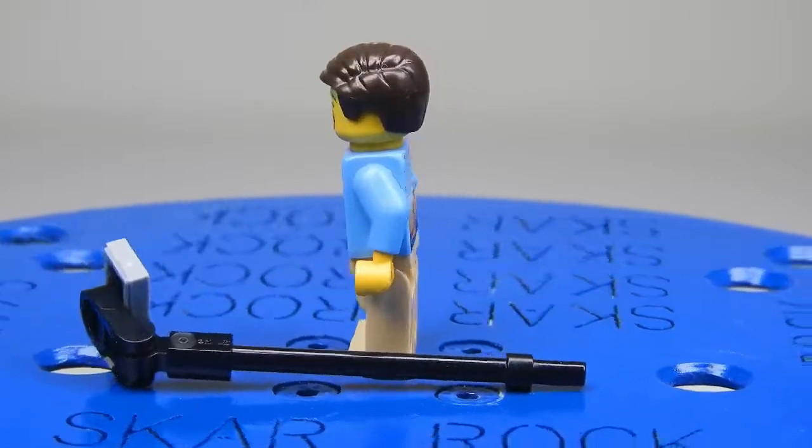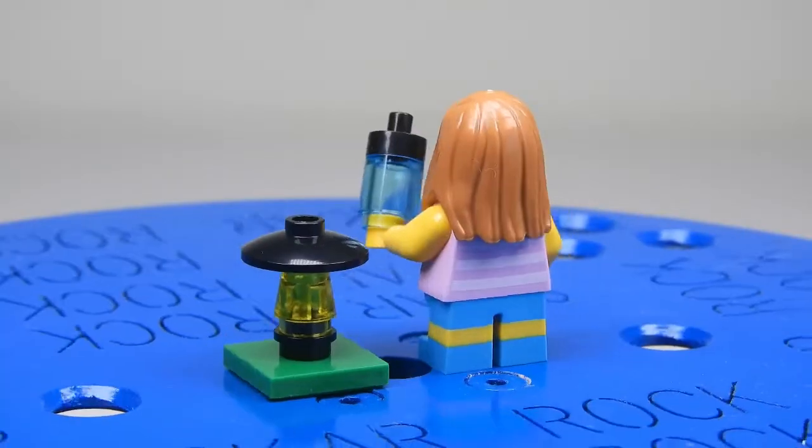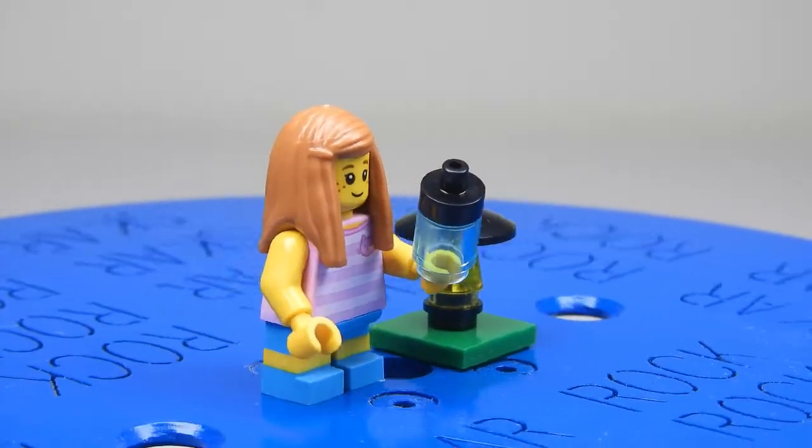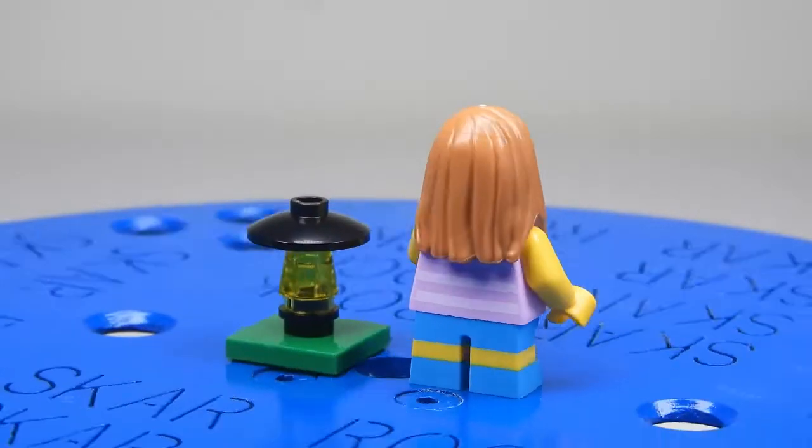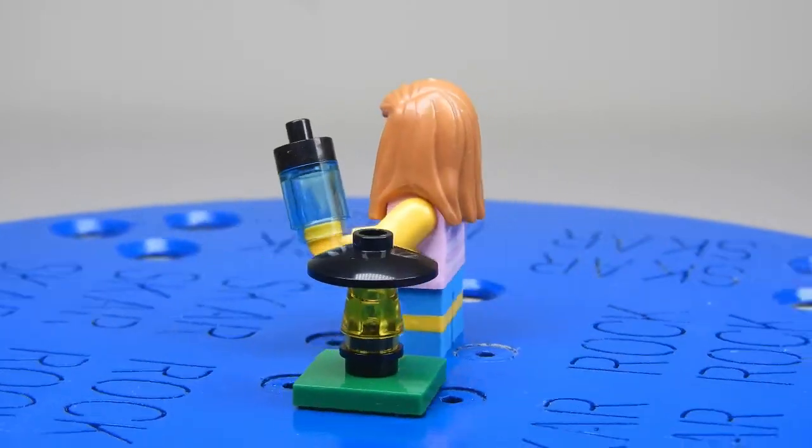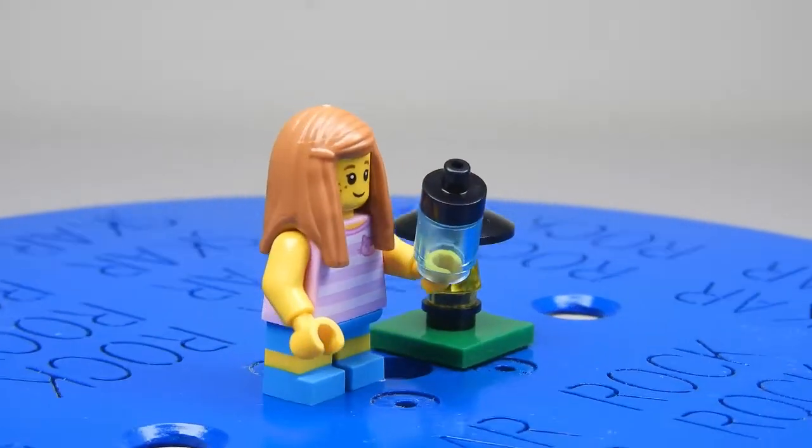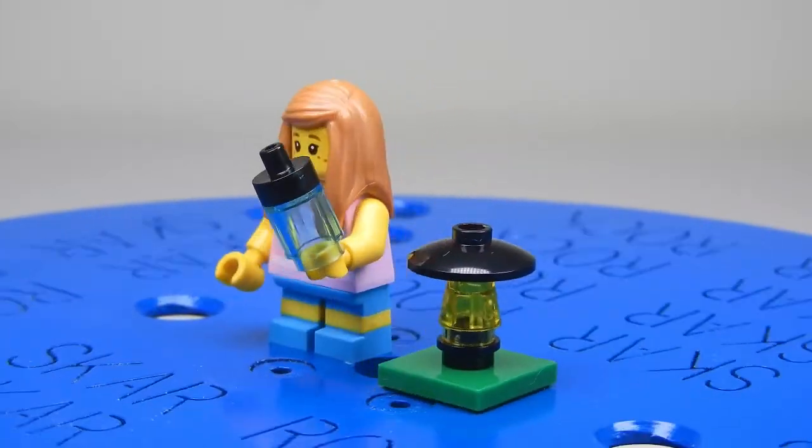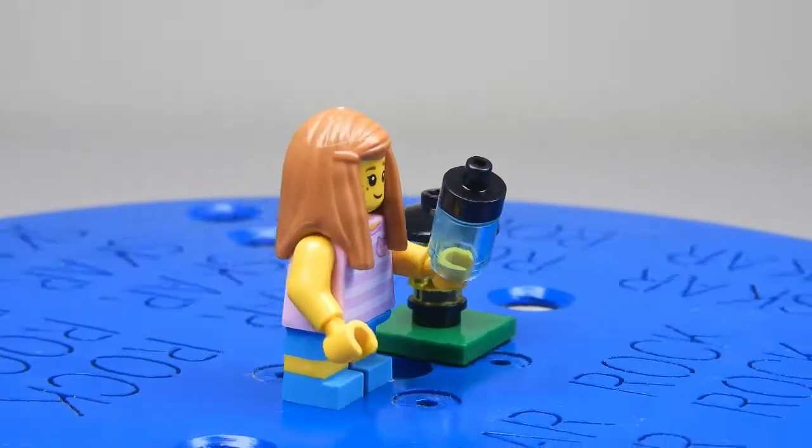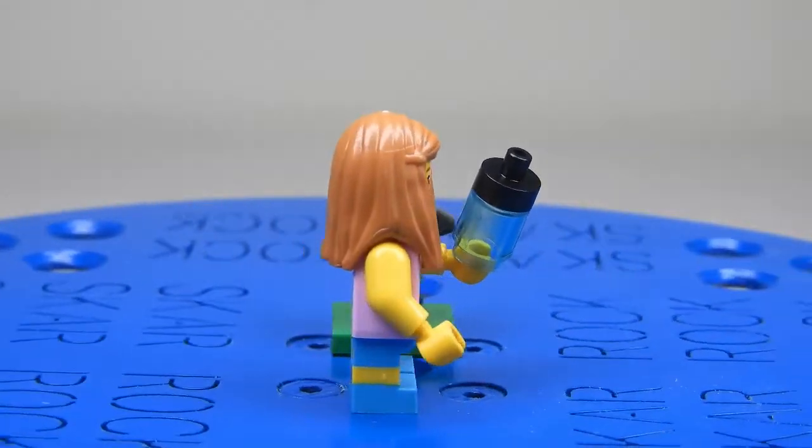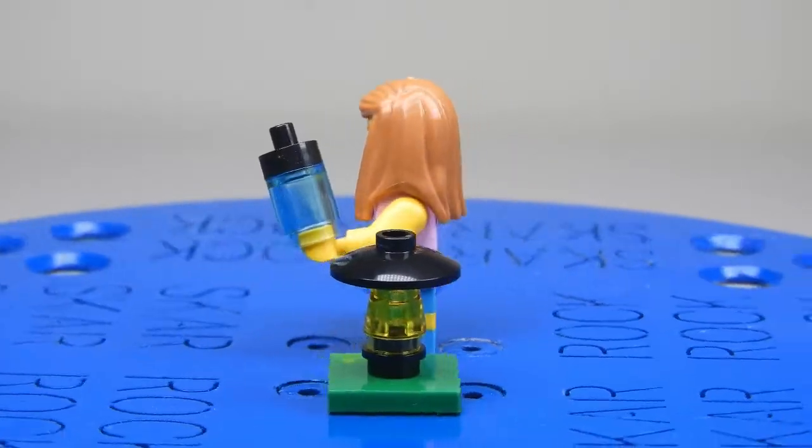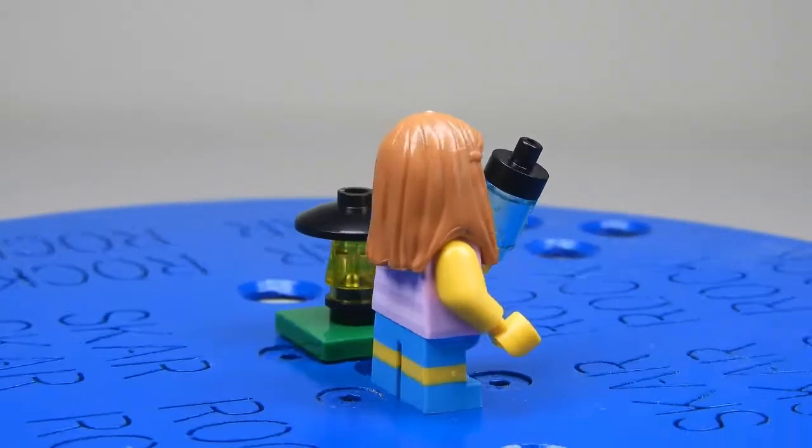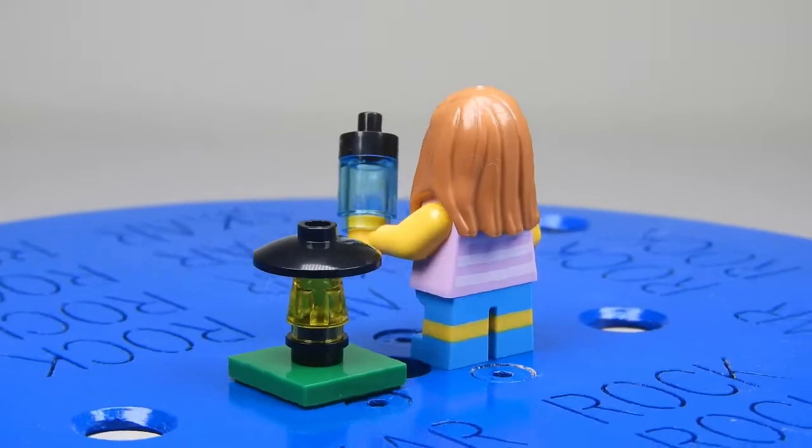Here we have a little girl with a water bottle. This is a really cool design as it's a translucent blue piece for the main frame of the bottle with one of these new black pieces for the top. With her there's a light, which is just a generic camping light. She has ginger hair with a pink striped t-shirt and blue and yellow striped little legs.